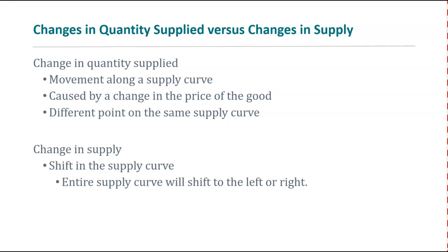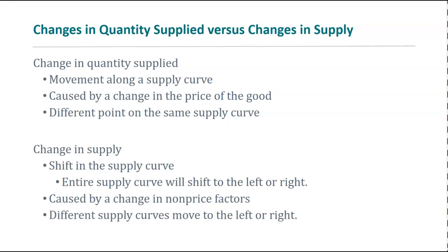On the other hand, something other than price could change in our world, and that would cause us to change the supply curve completely. You get new information — something happens — and you go back and revise how many Snickers bars you'd sell at each price. Maybe at $5 you used to want to bring 50, now you want to bring 400 because something has changed other than price. A change in supply is when the whole curve shifts to the right or left — the entire supply schedule changes — and it's caused by something other than a change in price.